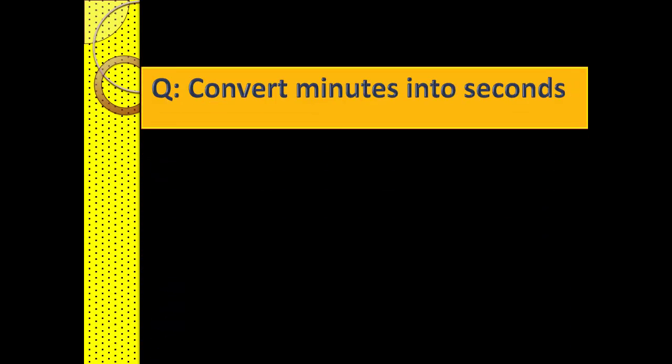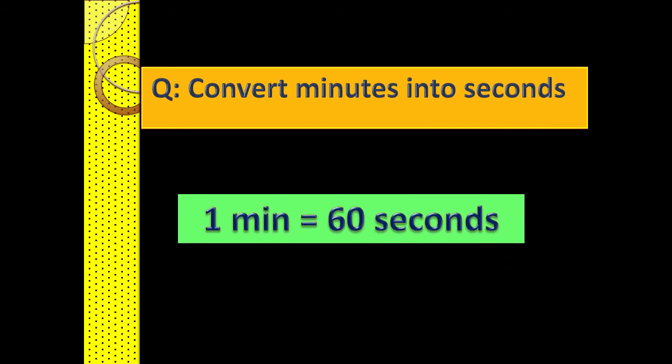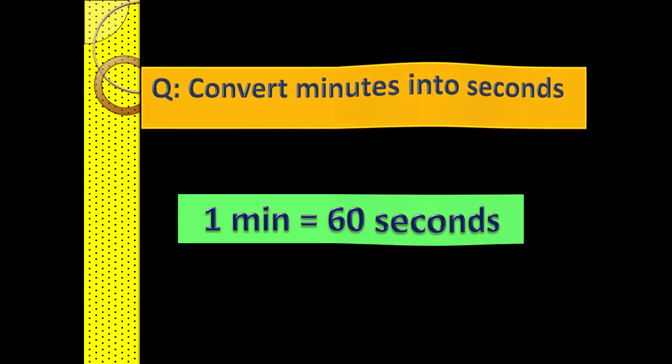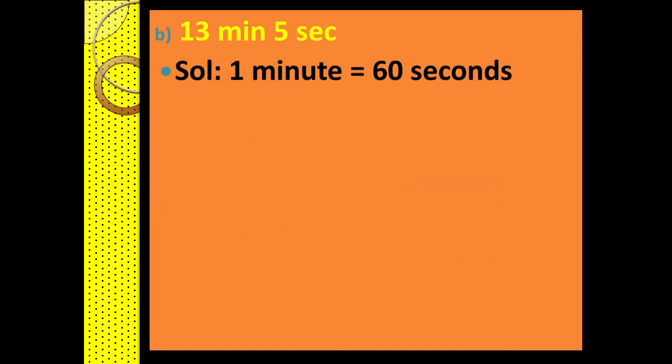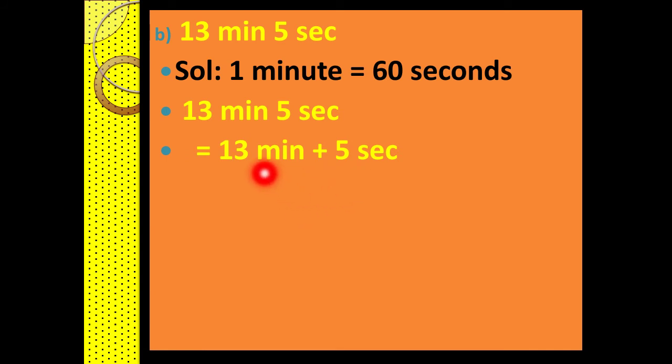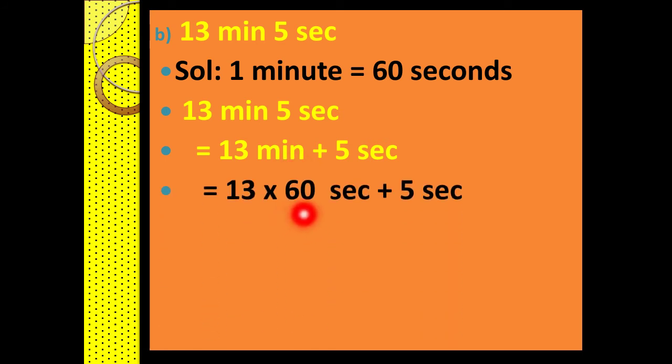Now we will learn how to convert given minutes into seconds. We will use the formula that one minute has 60 seconds. Let us do this with the help of an example — we will convert 13 minutes 5 seconds into seconds. First, we note that one minute has 60 seconds. In the second step, we split 13 minutes 5 seconds as 13 minutes plus 5 seconds, then we will change the minutes into seconds by multiplying by 60.